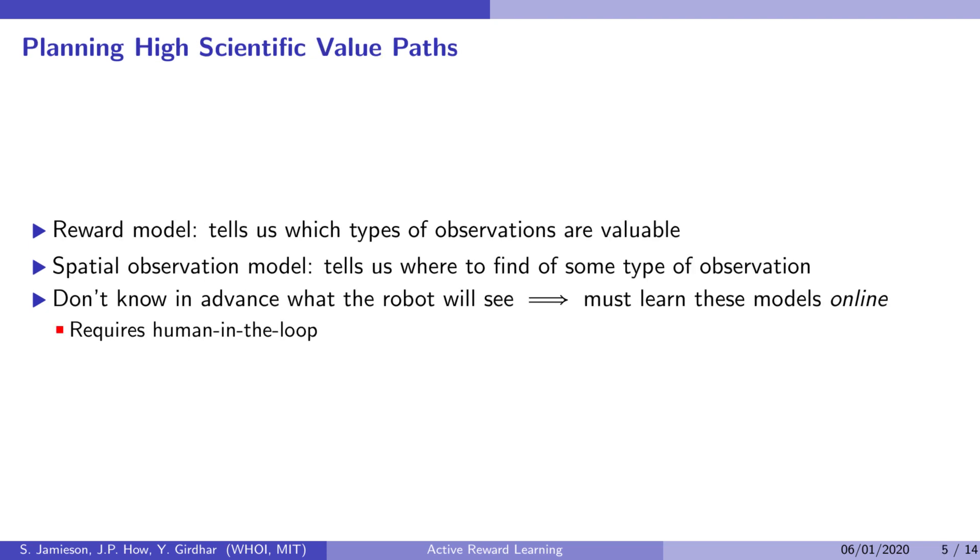So what does the robot need in order to be able to use an adaptive planning system? First, it needs to know which types of observations are valuable and which aren't. This is called a reward model. Second, it needs to know where to find more observations like the one it already has. This is called a spatial observation model.